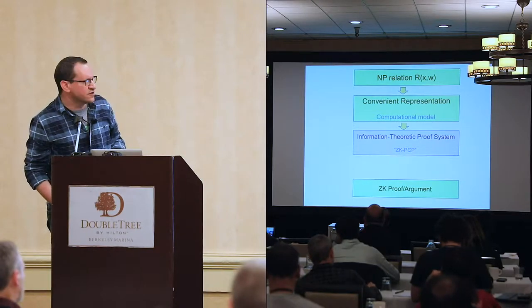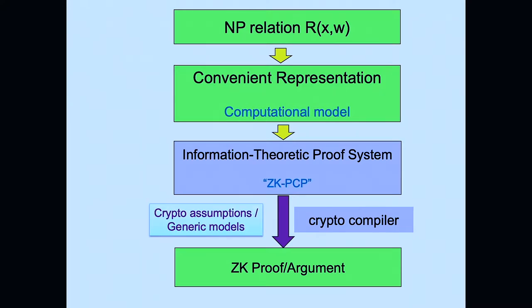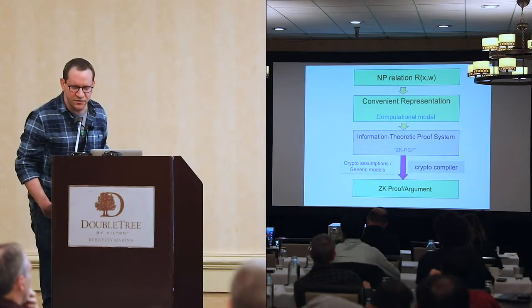At this point it looks abstract. We have different kinds of information-theoretic proof systems, and then a general compiler that uses cryptographic assumptions and tools to convert the information-theoretic proof system into an actual zero-knowledge proof in the plain model. Think of it as a crypto compiler that takes something unconditional and makes it into an actual usable protocol.